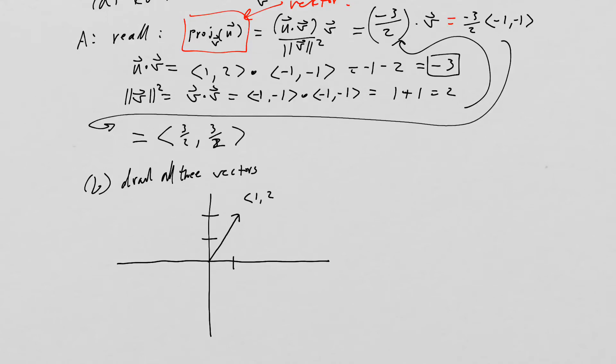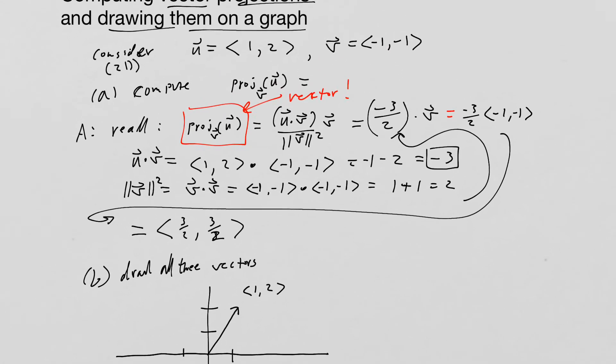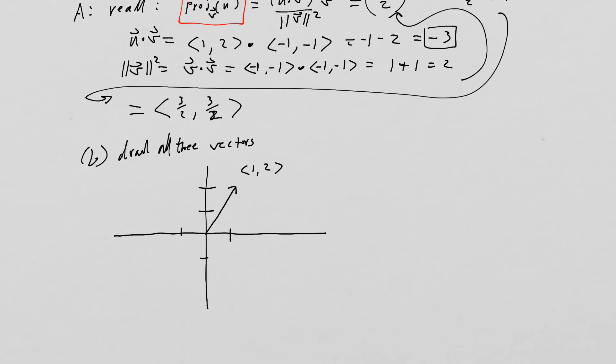So there is <1, 2>. So that is u. And then v is there, and that is going to be <-1, -1>.